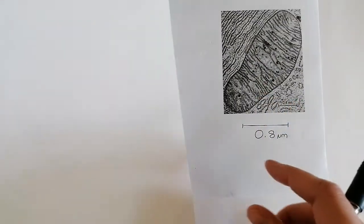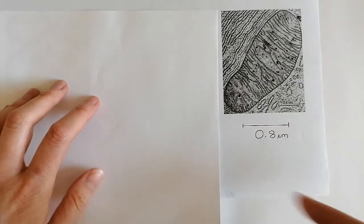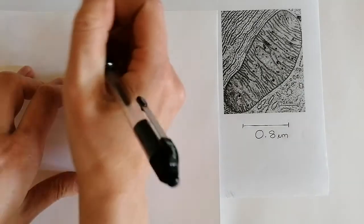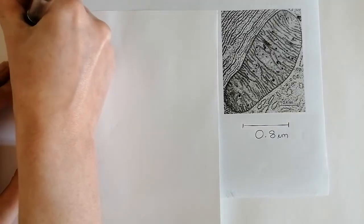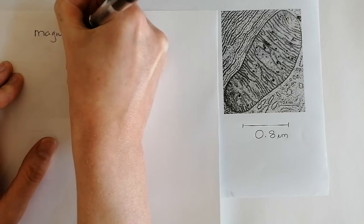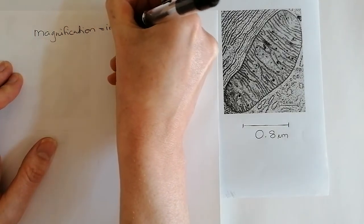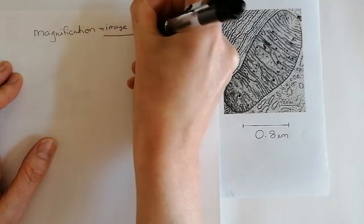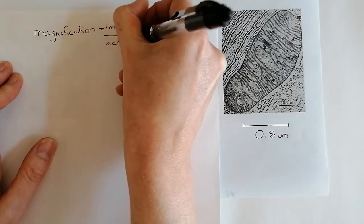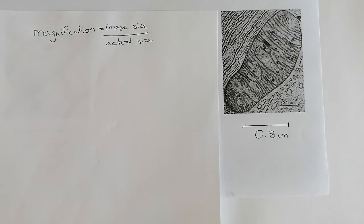So, we've got a mitochondria. And I'm going to do the same thing this time. So we're going to rewrite out our equation. And it is important that you do that every single time. Magnification equals image size. So how big the picture is divided by the actual size. And just as in physics, you should always write out your equation in longhand. So, same thing again.